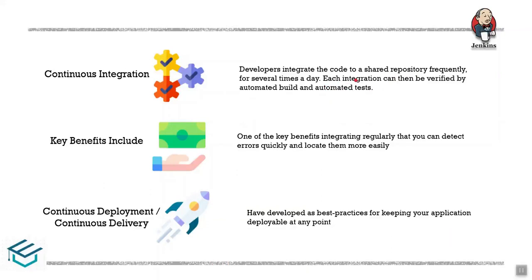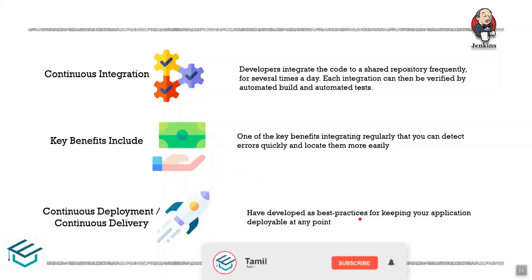One of the key benefits is that errors are easier to detect and fix. Continuous deployment and delivery are best practices for keeping your application deployable at any point. Any code changes can be deployed continuously. That wraps up the video on continuous delivery and deployment. Please like, comment, subscribe, and click the bell button.